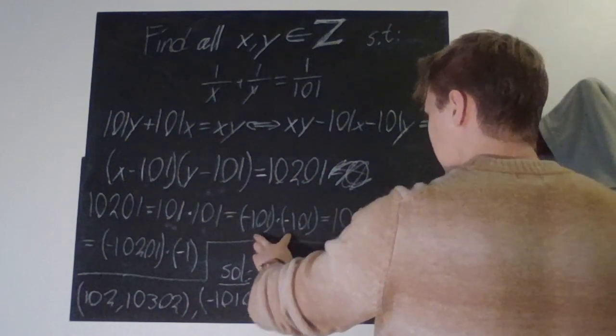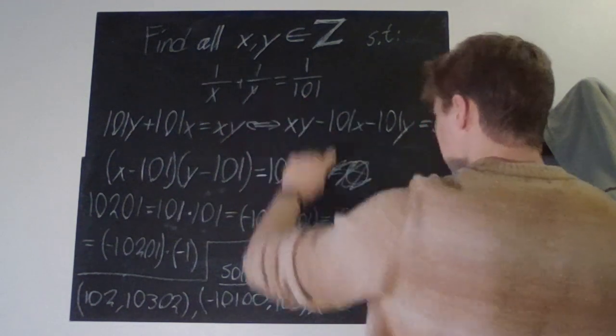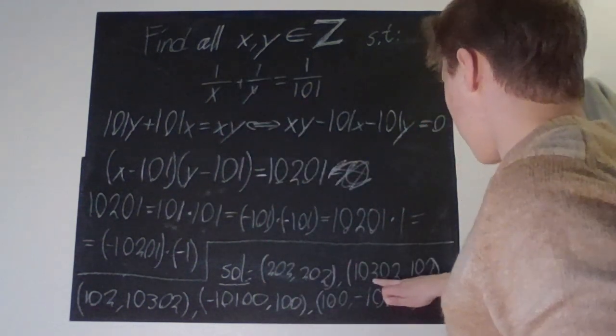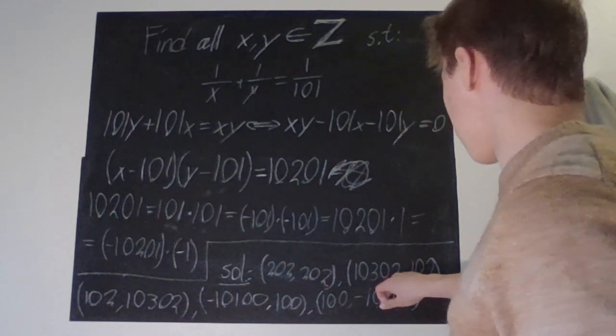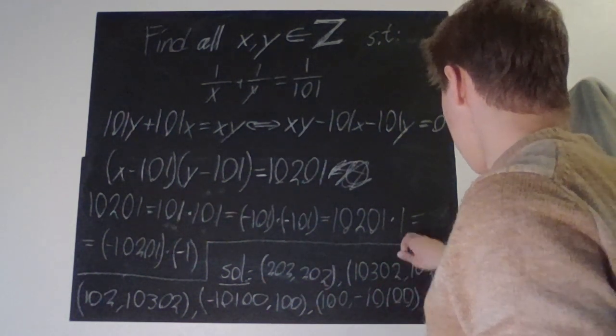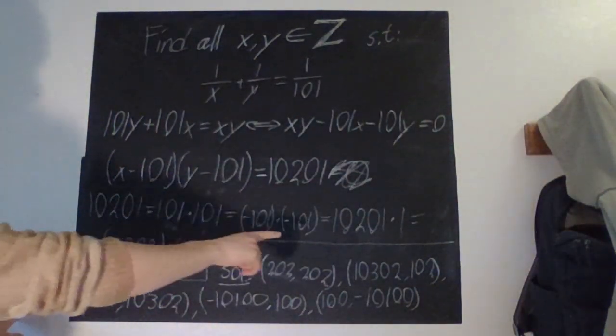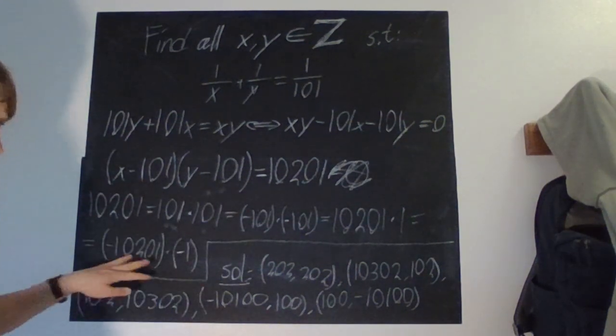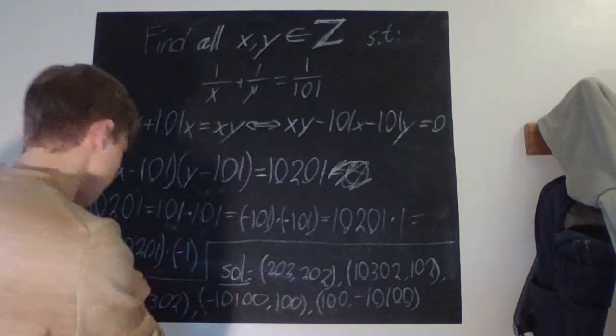And then this one has no real solution, has the solution zero, which can't be the case. And then for this case, we have that it's +101 in each case. And well, it's true for all of them.